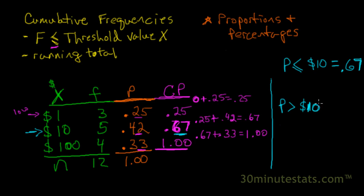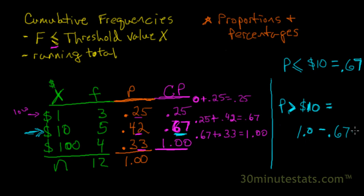We could ask what was the proportion that was greater than $10. Here we use the same trick that we learned with cumulative frequencies. Since we want to know what proportion was greater than $10, we start with the total proportion of 1 and subtract from that the proportion of goods sold equal to or less than $10, which is 0.67. That gives us 0.33. We can verify that by looking — there's only one category above $10, and the proportion there was indeed 0.33.